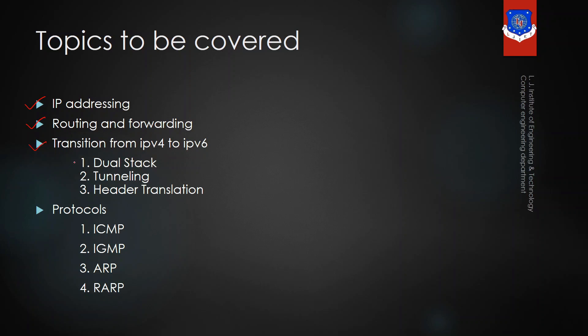These are the responsibilities of the network layer. The first responsibility is IP addressing, the second is routing and forwarding, the third is transition from IPv4 to IPv6 — which covers dual stack, tunneling, and header translation. The fourth responsibility involves different protocols: ICMP, IGMP, ARP, and RARP. In this session we will discuss each responsibility briefly, and in future sessions we will cover each in detail.